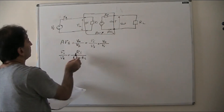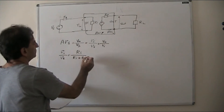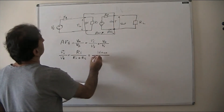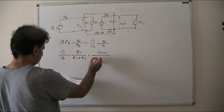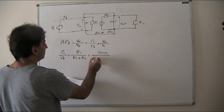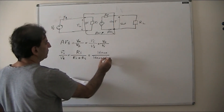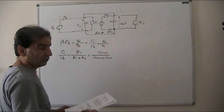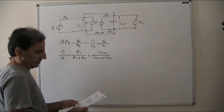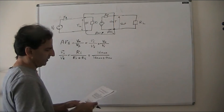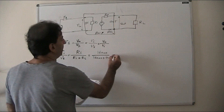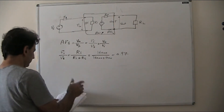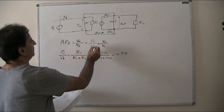VI/VS = RI / (RI + RS). Putting in the values: RI is 16,000 ohms (16 kilo ohm, the internal resistance of the amplifier), and RS is 400 ohms (0.4 kilo ohm, the internal resistance of the source). So VI/VS = 16000 / (16000 + 400) = 0.97. There is no unit, because it's voltage over voltage.